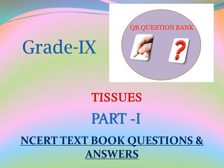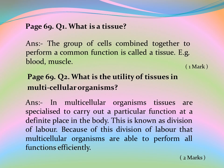Grade 9 Tissues Part 1 — NCERT Textbook Questions and Answers. Page 69, Question 1: What is a tissue? Answer: The group of cells combined together to perform a common function is called a tissue. Examples: blood, muscle.